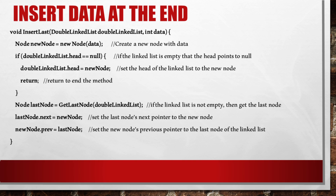The method InsertLast takes two parameters: the doubly linked list and an integer named newData. A new node is created with data. If the linked list is empty, the head is set to the new node and the method returns. Otherwise, the last node is retrieved using GetLastNode. The last node's next pointer is set to the new node, and the new node's previous pointer is set to the last node.